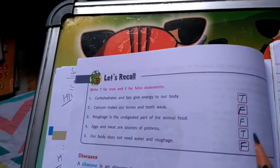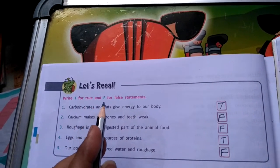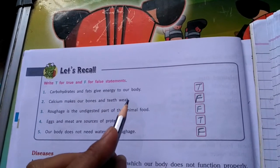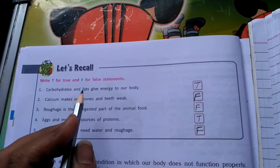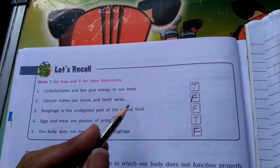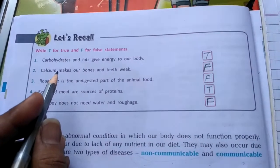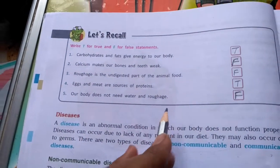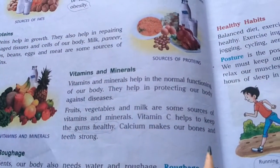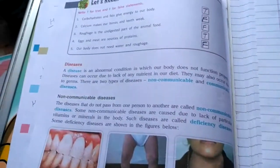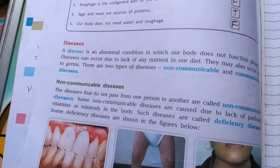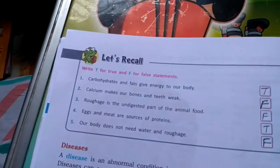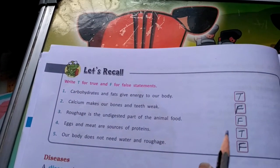The first book exercise says: write T for true and F for false. First statement — carbohydrates and fats give energy to our body — that is TRUE, both are energy-giving nutrients. Second statement — calcium makes our bones and teeth weak — that is FALSE. Calcium makes our bones and teeth strong, not weak.